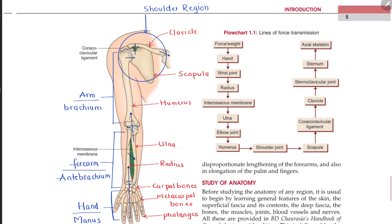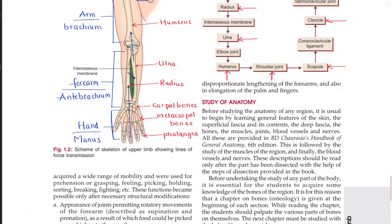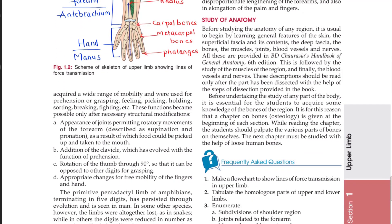Here you can see the line of force transmission. When you hold anything in your hand, the force first goes to the hand, then to the wrist, then to the radius, then to the ulna, then to the humerus, then to the shoulder joint, then to the scapula, then to the clavicle, then to the sternum, and then to the axial skeleton. You should know this line of force.